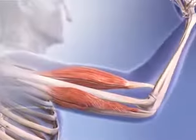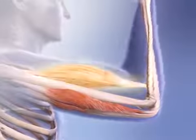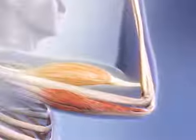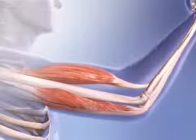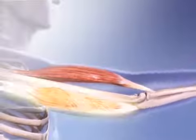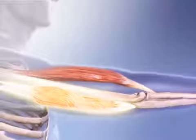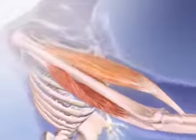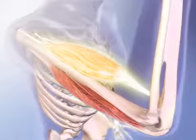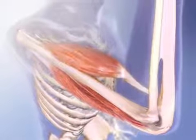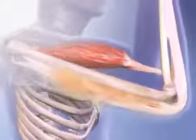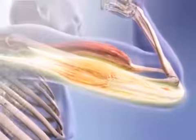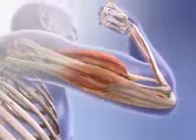A muscle that contracts to generate the main force of an action is called the prime mover, or the agonist for that action. Muscles that perform the paired and opposing action are called the antagonists. The agonists in elbow flexion are the muscles that contract to bring the elbow joint into a flexed position. The antagonists are the muscles that perform the opposite action, elbow extension.